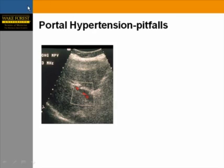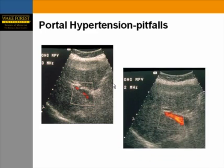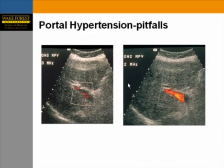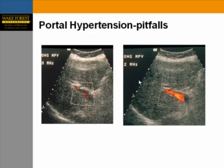An example of a pitfall: at 3 MHz, there is little blood flow visible in the portal vein, raising suspicion for portal venous thrombosis. Switching to 2 MHz fills the vein with a nice color signal, avoiding a false diagnosis of portal vein thrombosis.